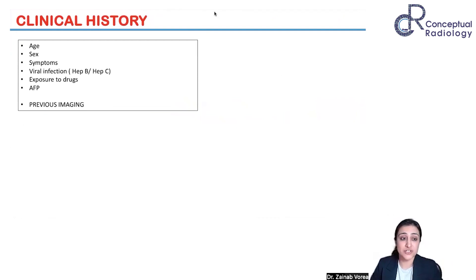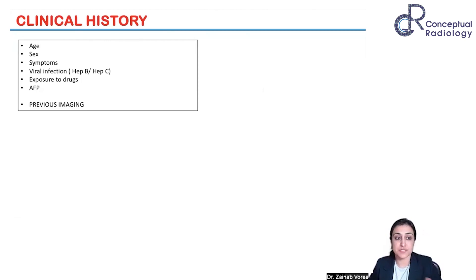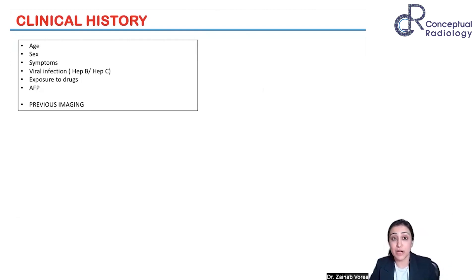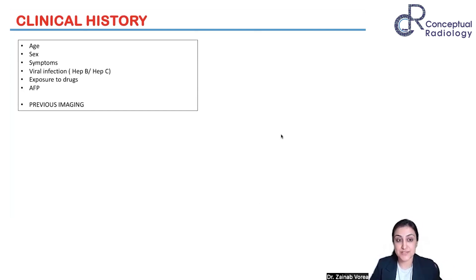Before we start imaging, in every case of a suspected liver lesion, call the patient back and assess all of these things. Age is important. Gender preference exists — almost all benign lesions are more common in females. Cirrhosis, with alcohol being the most common cause, is more common in males, as are malignant lesions like HCC. Hemangioma, FNH, and adenoma — all three common benign lesions — are more common in females, with a huge preponderance, making gender particularly important in narrowing differentials.